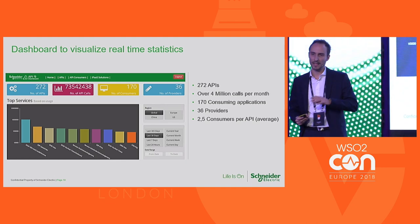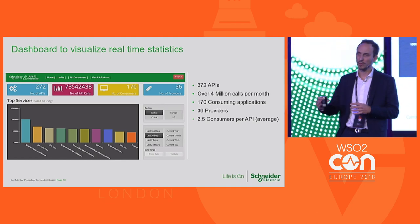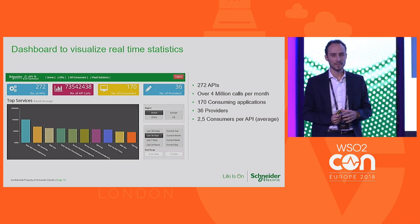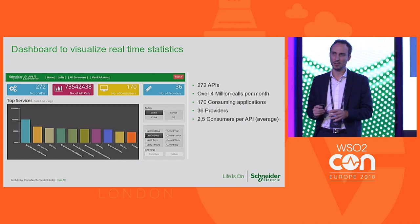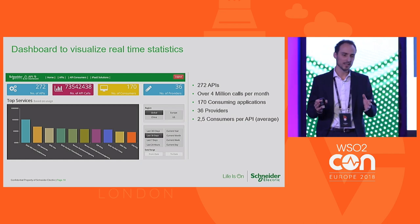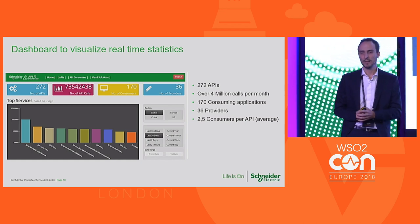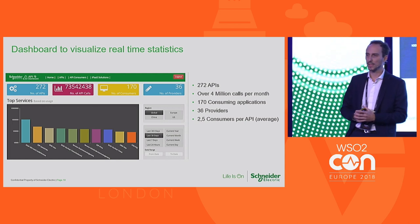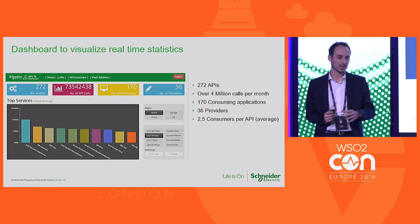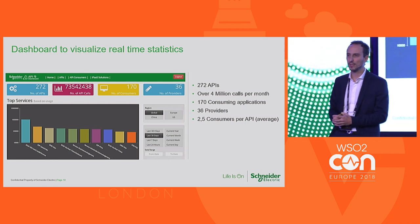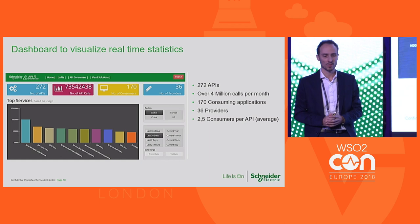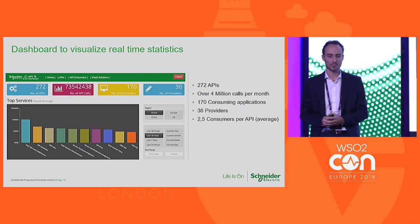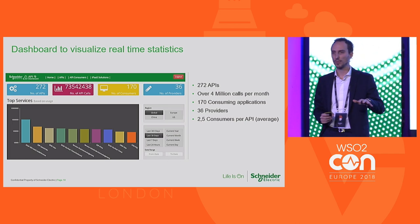For real-time analytics on API runtime and consumers, we developed a custom dashboard on WSO2 Analytics, using the database populated by the WSO2 analytics tool. With this dashboard, we can see overall metrics: currently around 272 APIs, 4 million calls per month, 170 consumers, 36 providers, and 2.5 consumers per API. That last metric is particularly interesting to us because we want to make sure our APIs are being reused.